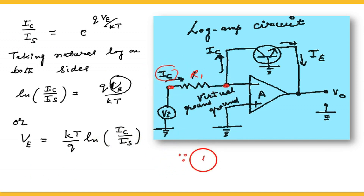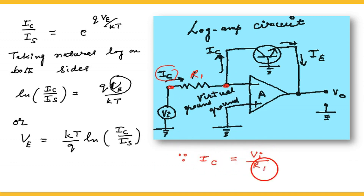On one side the voltage is Vi and on the other side the voltage is 0. So the collector current is written across R1, giving IC equals Vi divided by R1. That is the collector current written across R1.